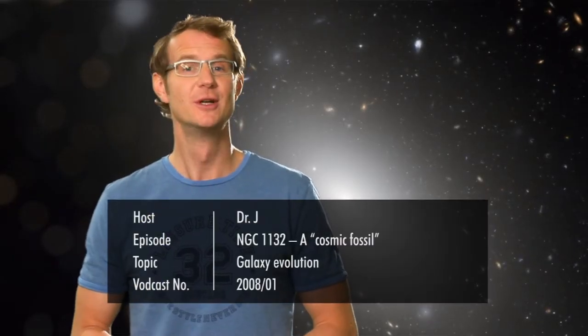Welcome to the Hubblecast. In this episode we'll take a close look at the latest image from the Hubble Space Telescope. It shows the giant elliptical galaxy NGC 1132. Now you may ask, what's so special about this fuzzy, seemingly bland object? Well, the interesting thing about it is not so much what it looks like today, but rather what happened in its past. So let's try to trace its history by taking a very close look at its present day features.